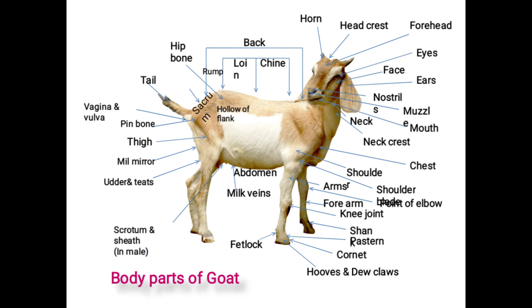Then scrotum and sheath, in case of the male. Scrotum is a male genital organ which is a pouch-like structure between the two hind legs that accommodates the testicles and regulates the temperature for sperm production. Sheath is a skin flap which covers the penis and is attached to the body, extended up to the navel flap. It protects the penis from external injury.